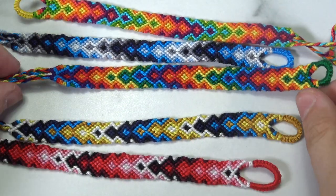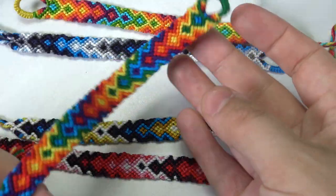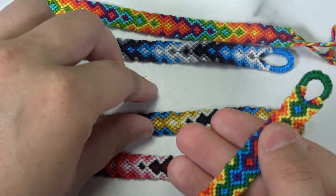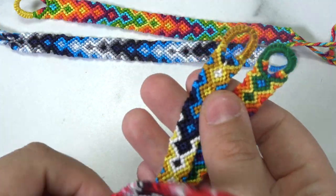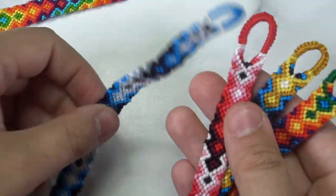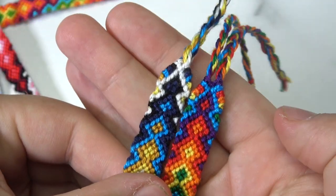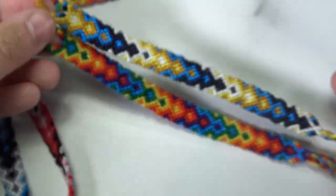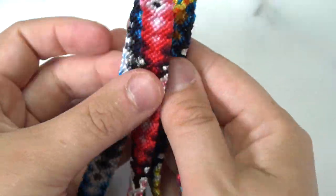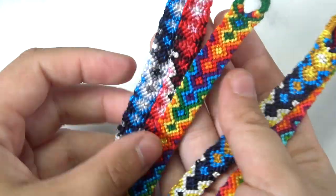And before we get started don't forget to hit a big thumbs up subscribe to our channel and hit that notification bell for more fun craft. We will also be linking a tutorial down below how to make the triangle ends of a friendship bracelet so from start to finish it is beautiful.